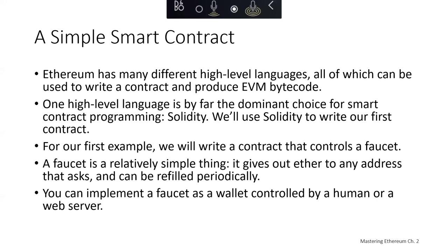Let's dive into a very simple smart contract. Ethereum has multiple high-level languages that can be used to write contracts and produce EVM bytecode. The most popular is Solidity, which was created by Gavin Wood and is the most widely used language in Ethereum. For our first example, we're going to write a contract that controls a faucet to give out ETH. Faucets are relatively simple smart contracts — they give out ETH to any address that requests some, and they must receive ETH periodically so they can continue to distribute it.